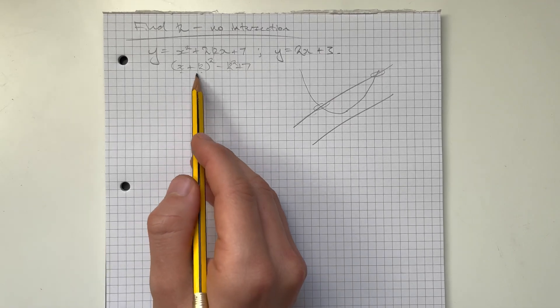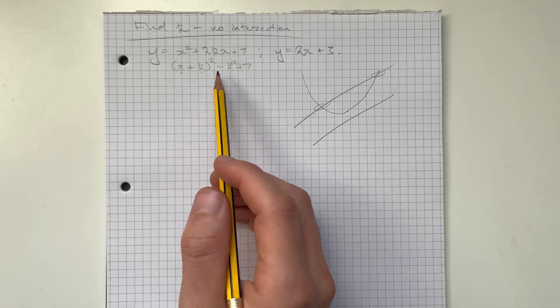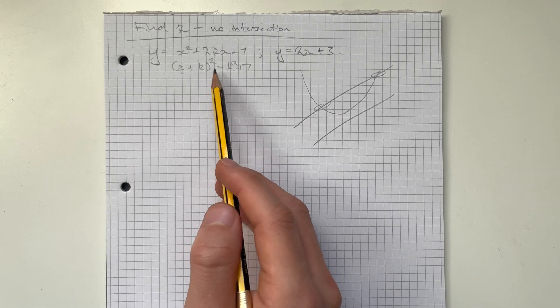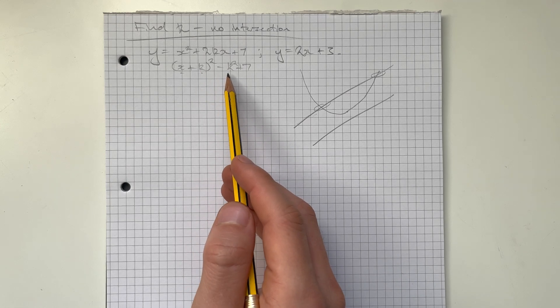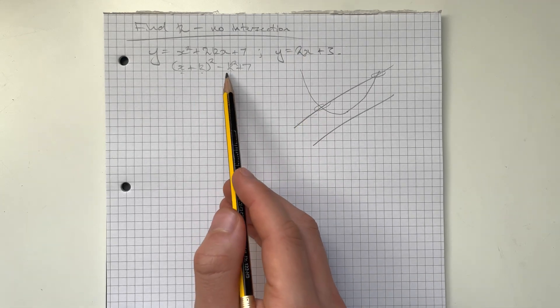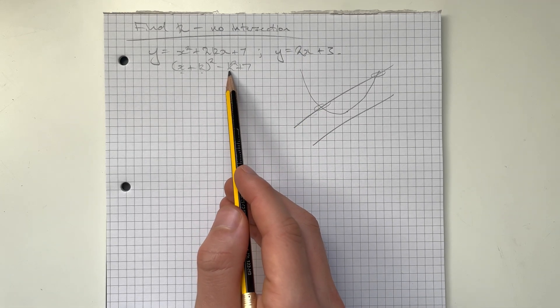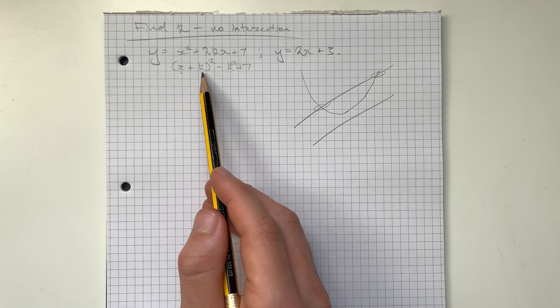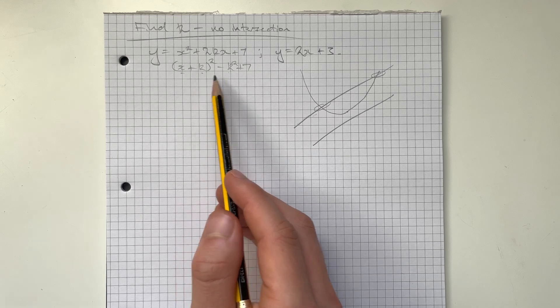So it moves it left by k and down by k squared. So we can see as we increase k away from zero in either direction, whether it's positive or negative, the magnitude of k. So as the magnitude of k increases, this is going to move down. It's going to move left as well, or right, depending on whether it's positive or negative, but it's always going to move down.